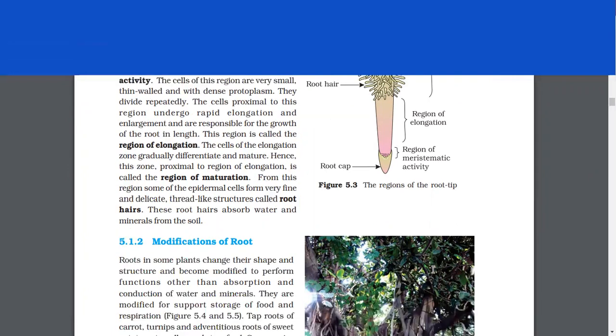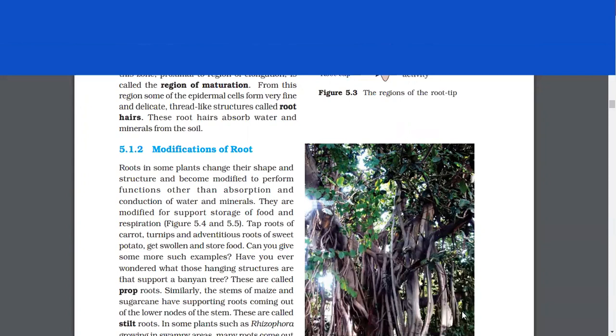The cells proximal to this region undergo rapid elongation and enlargement and are responsible for the growth of the root in length. This region is called the region of elongation. The cells of the elongation zone gradually differentiate and mature. Hence, this zone proximal to region of elongation is called the region of maturation. From this region, some of the epidermal cells form very fine and delicate thread-like structures called root hairs. These root hairs absorb water and minerals from the soil.